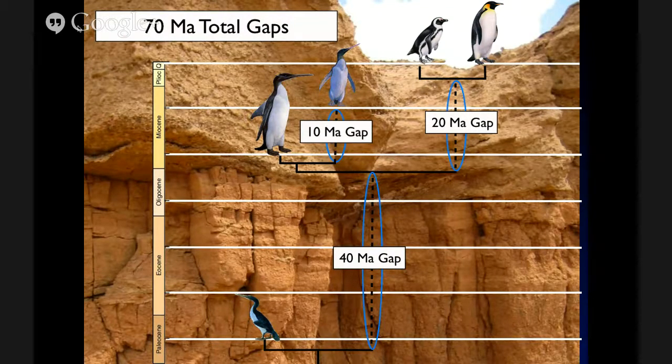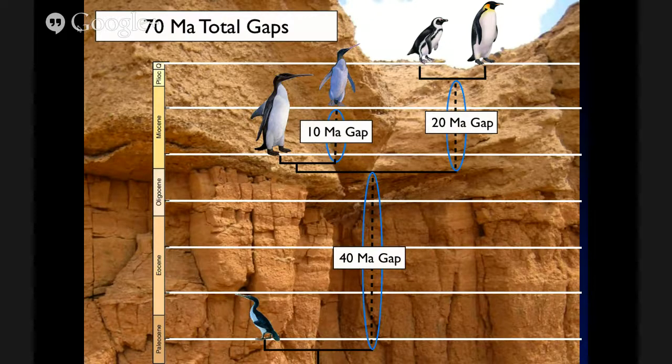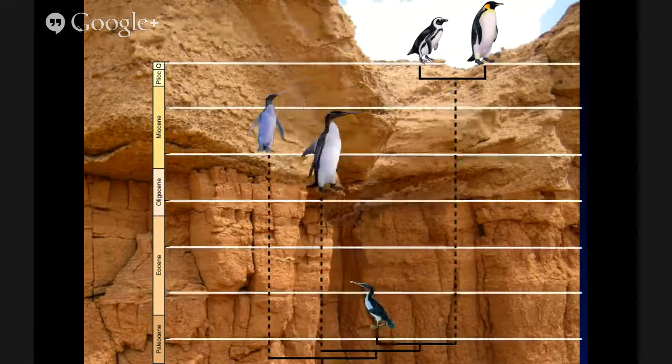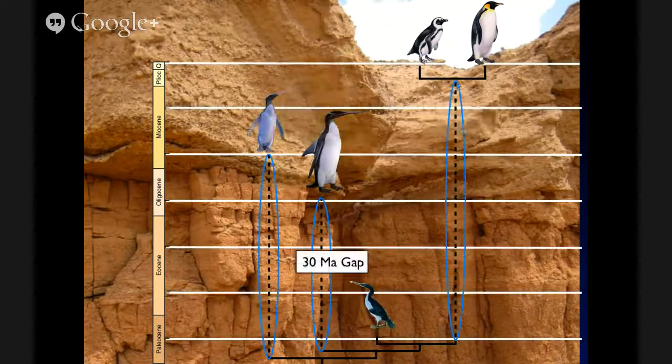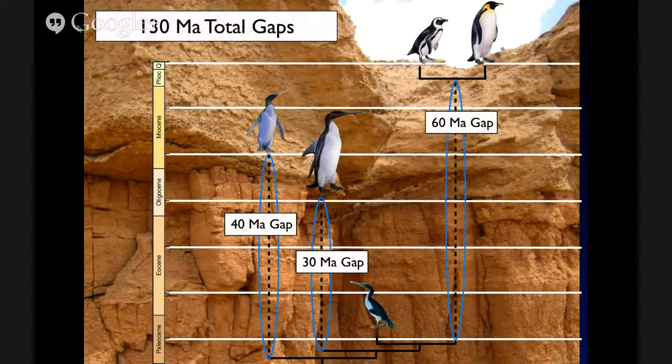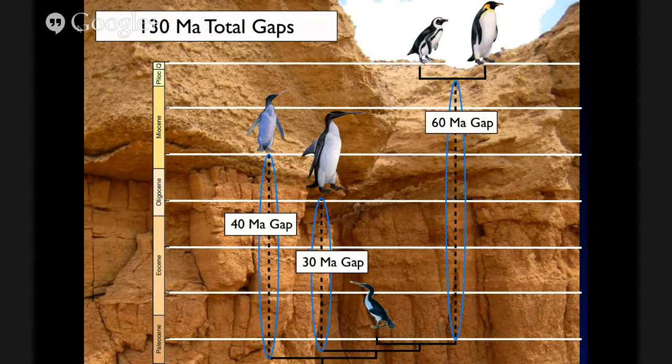Well, how can we use that information? There are many different ways. One way is we can test competing hypotheses if someone has an alternate hypothesis that the penguin at the bottom, Waimanu, is the sister taxons of the crown clade. We can look at how that topology compares. And in this case, it fits the stratigraphic record much worse. It opens up several new, longer gaps. And now we have 130 million years in ghost lineages. And so this phylogeny would be said to fit the stratigraphic record much more poorly than the first one. So this is a nice kind of independent source of data for evaluating hypotheses.